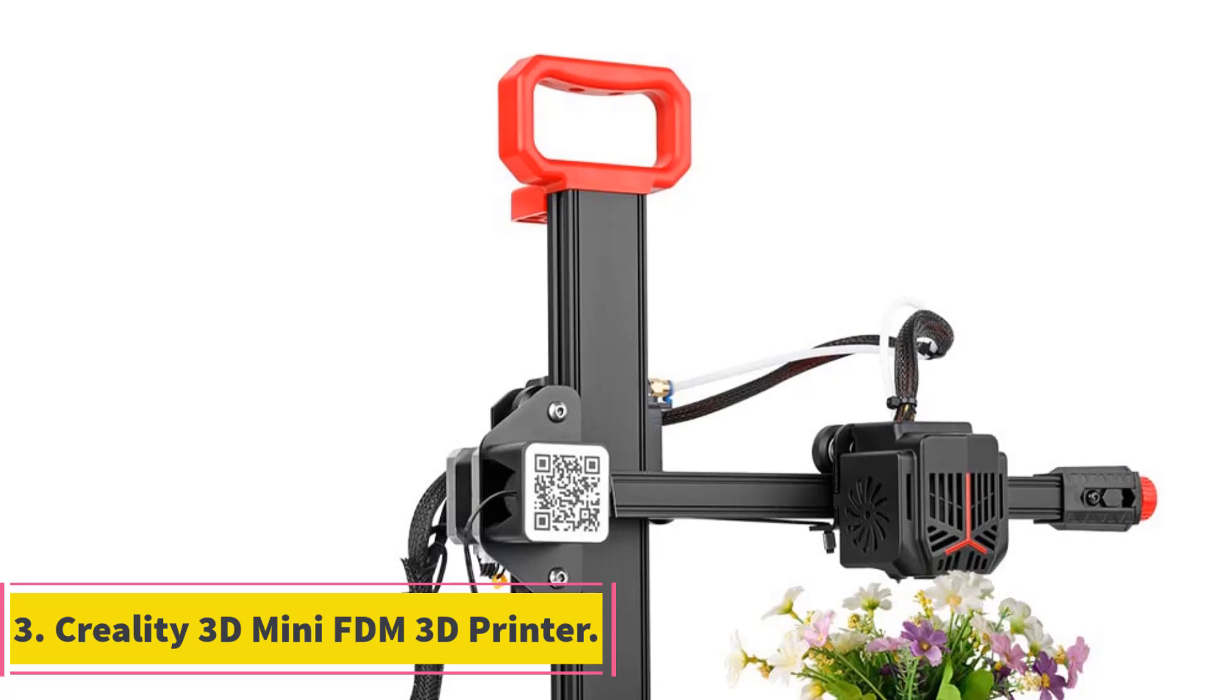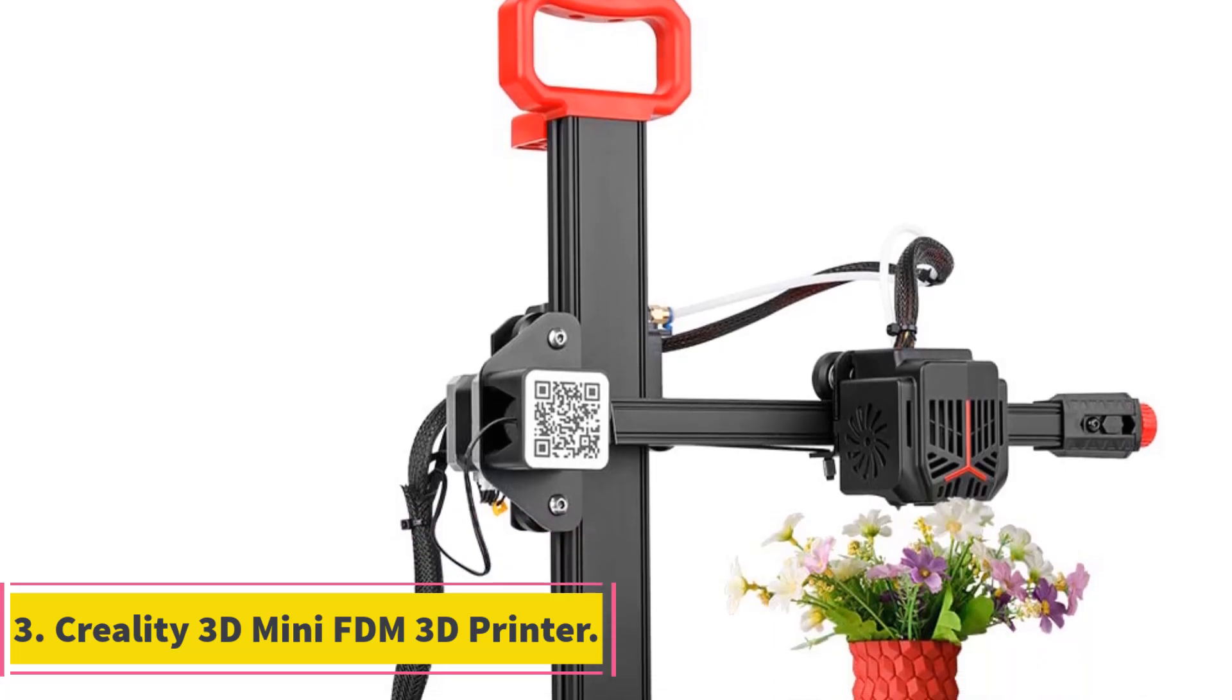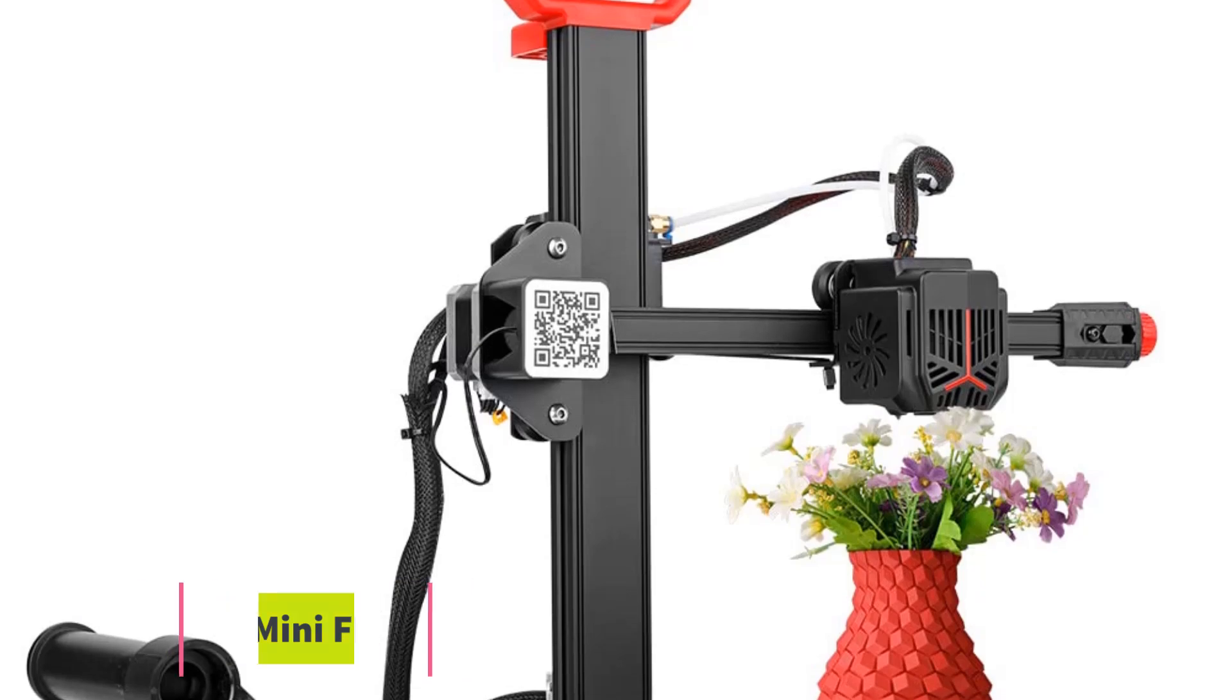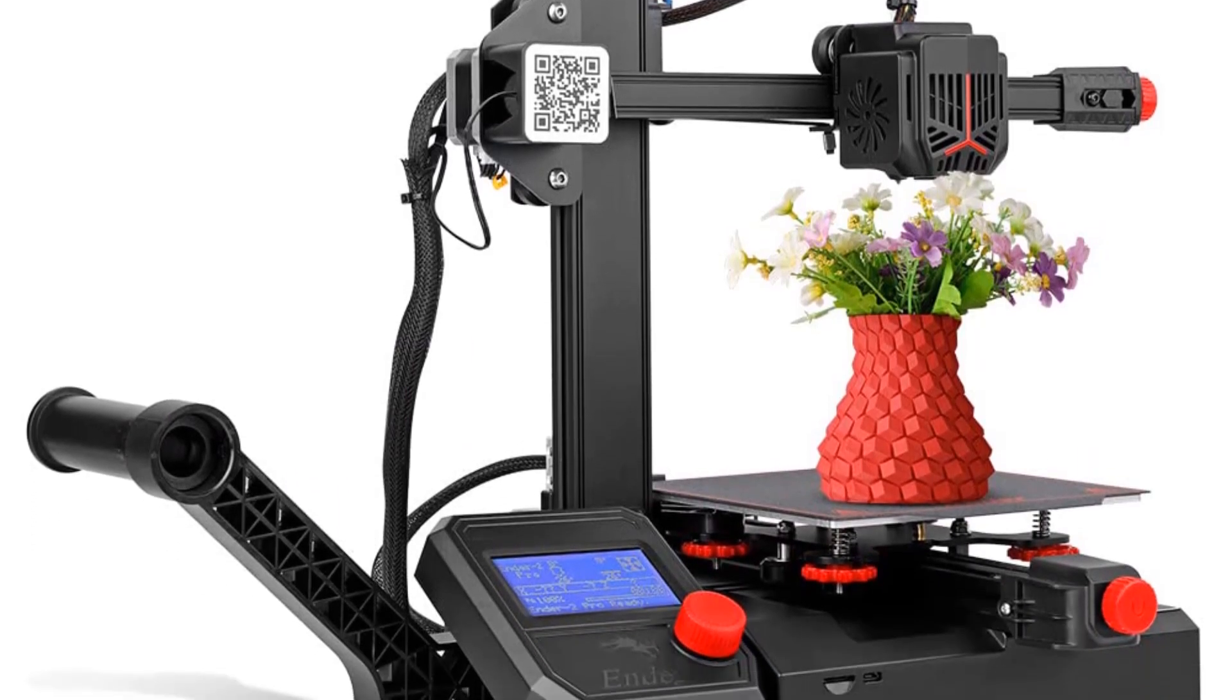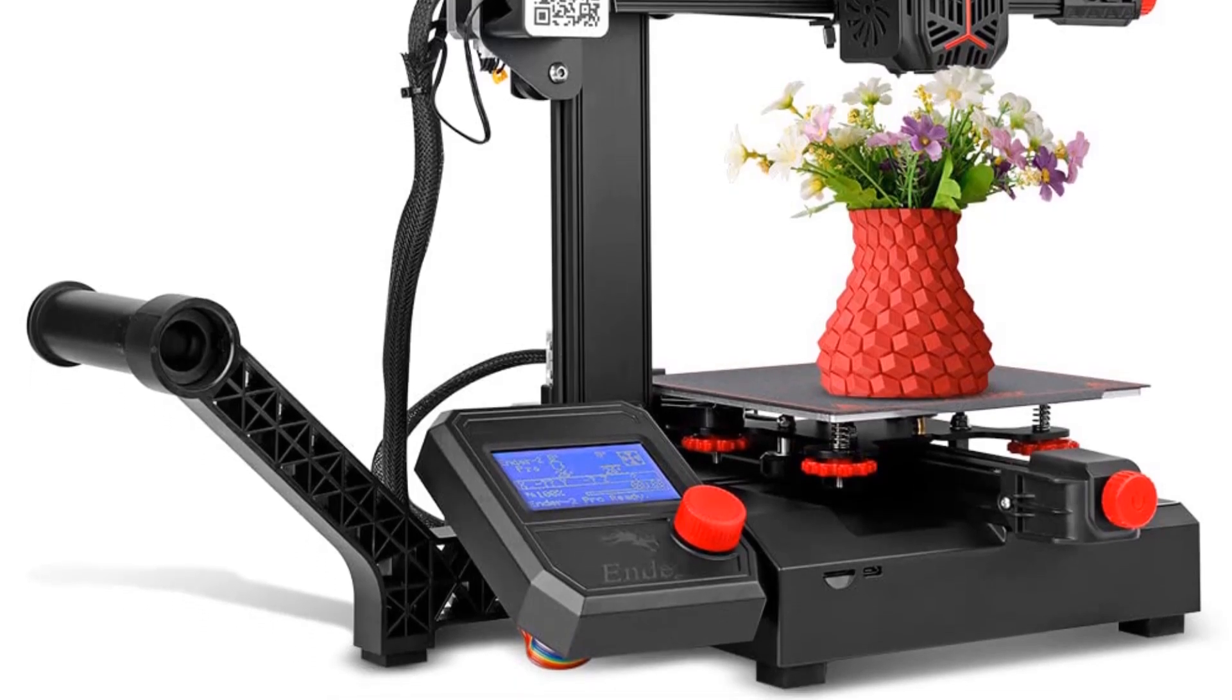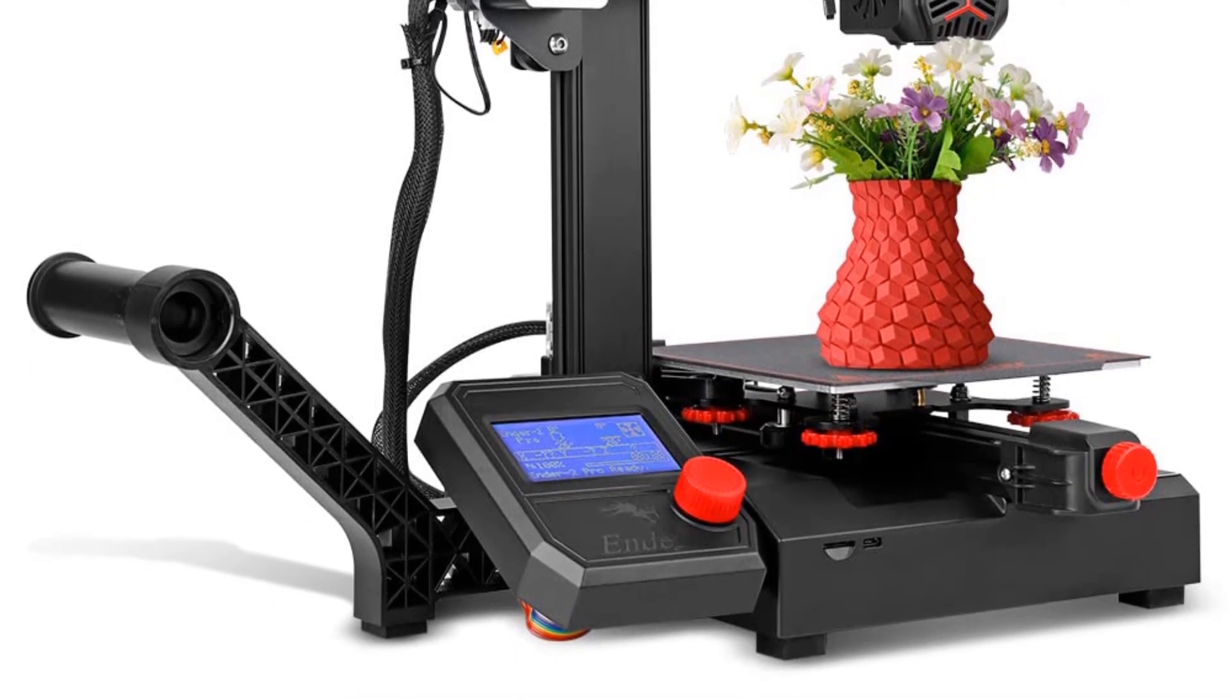Number 3: Creality 3D Mini FDM 3D Printer. The Creality 3D Mini FDM 3D Printer, specifically the Ender 2 Pro model, offers a quick assembly process with only 7 screws to tighten, making it a 90% pre-installed device.